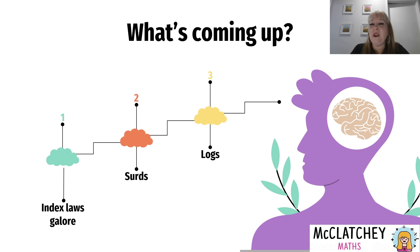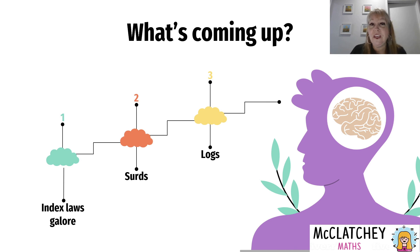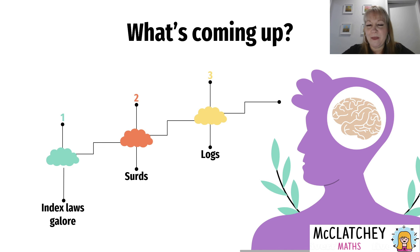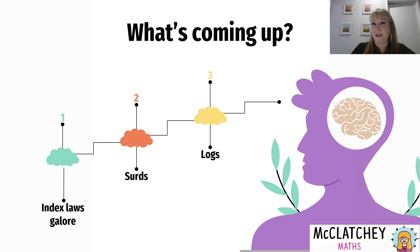Let's take a quick look at what's coming up in our future videos. We are going to do index laws galore over the next few videos: Index Law one, two, three, four — all the way up to everything you need into year 10. Then we're going to start something called surds, which is for our year 10 students, so if you're in year seven, eight, or nine don't worry about that too much. We're also going to have an introduction to logarithms, which is for year 10 and up students. Lots to come in this series.